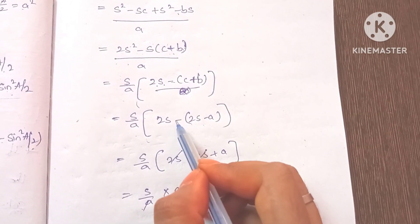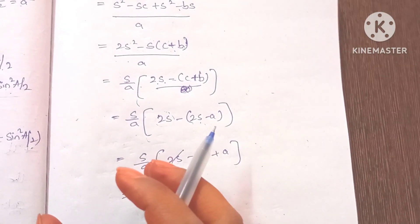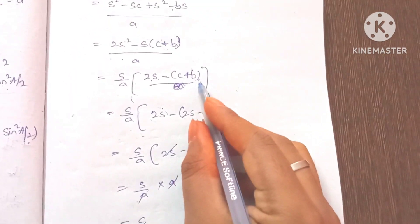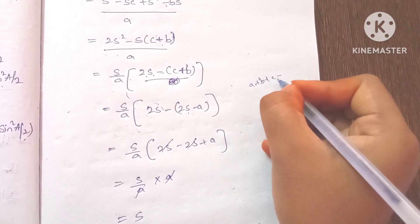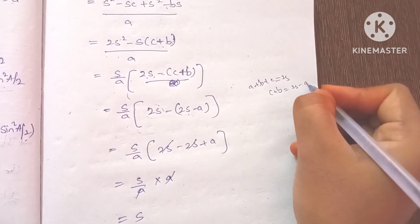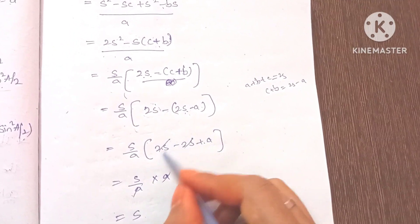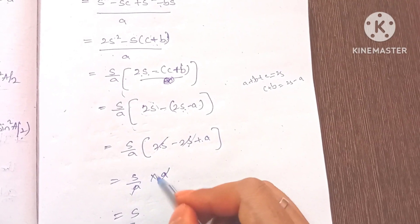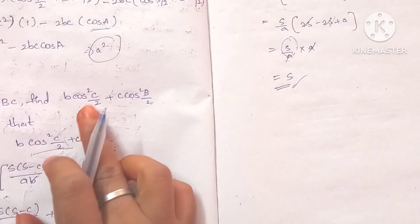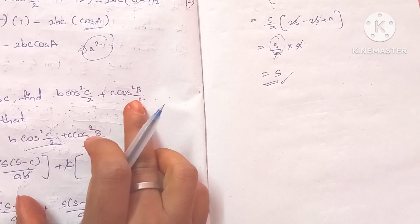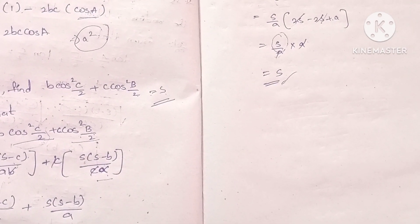Now 2s - (b+c): since a + b + c = 2s, we have b + c = 2s - a. So 2s - (2s - a) = a. Therefore the expression becomes s/a into a, and the a's cancel, giving us s. So b·cos²(C/2) + c·cos²(B/2) = s. Thank you for watching this video.